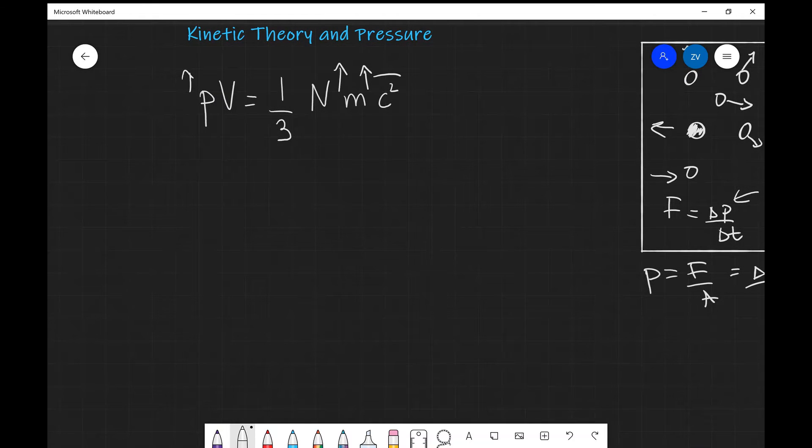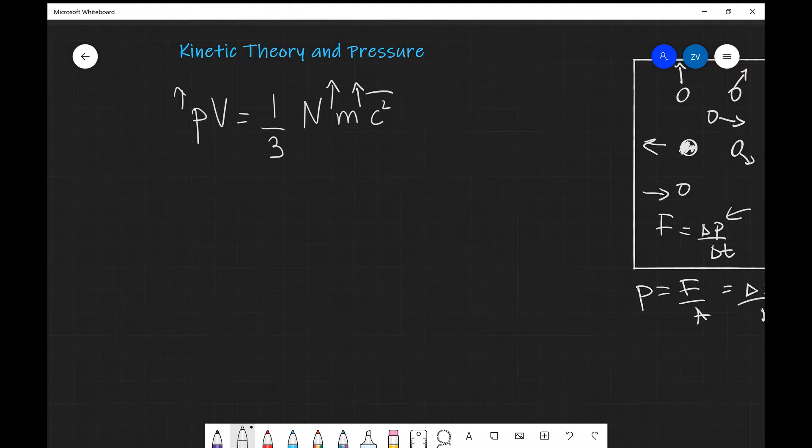There's another way that we can actually write down this equation, and that is if we think about the density. Now we know that the density of a gas ρ is equal to mass over volume.